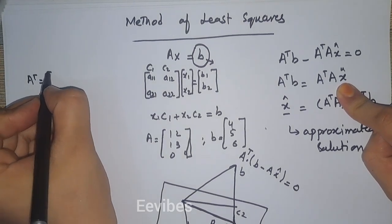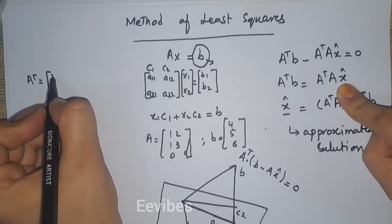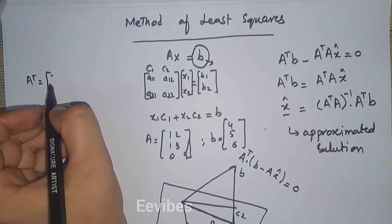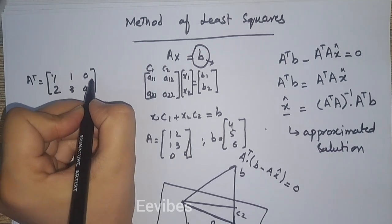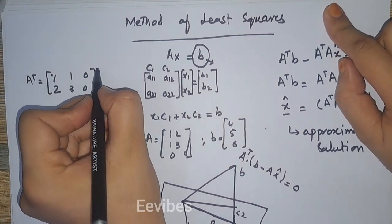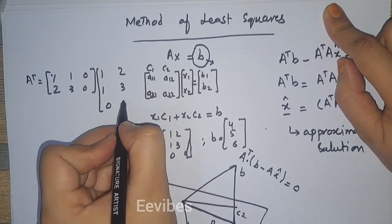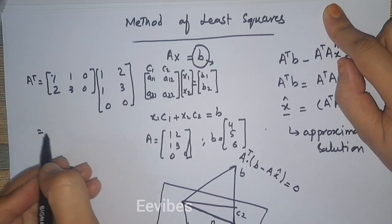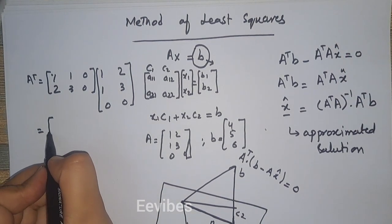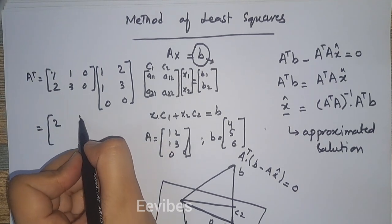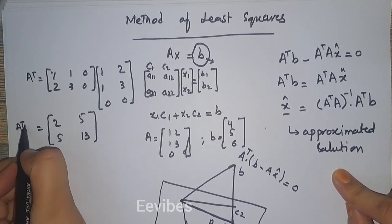A^T will be equal to [1, 1, 0; 2, 3, 0], and you have to multiply it with A, which is equal to [1, 2; 1, 3; 0, 0]. When you find the product of these two matrices, you are going to get [2, 5; 5, 13]. This is actually A^T into A.